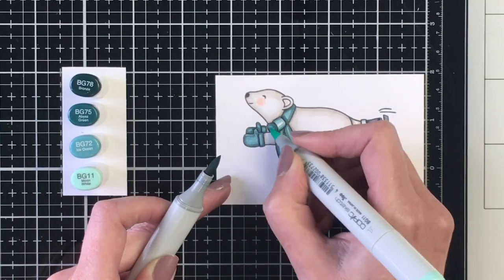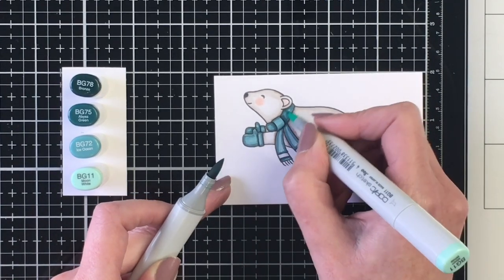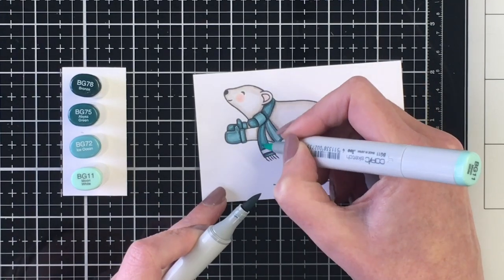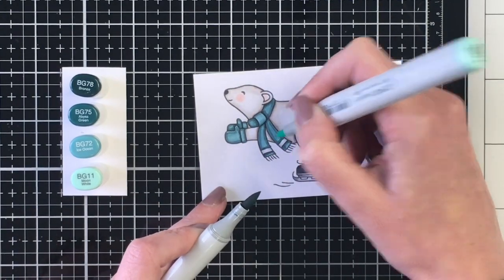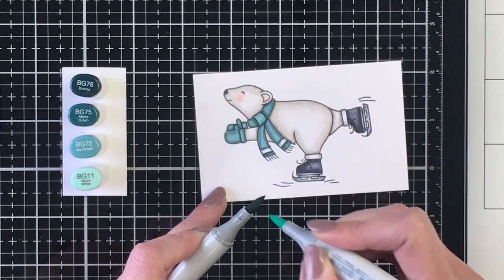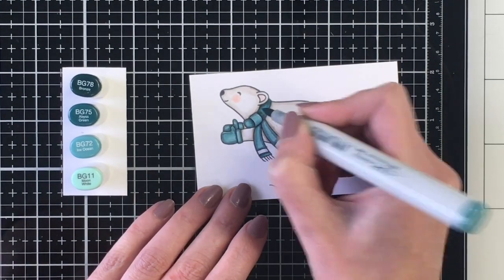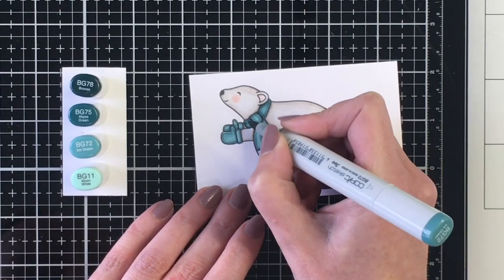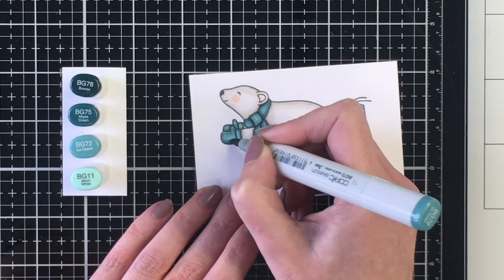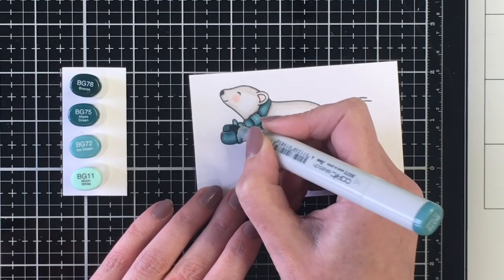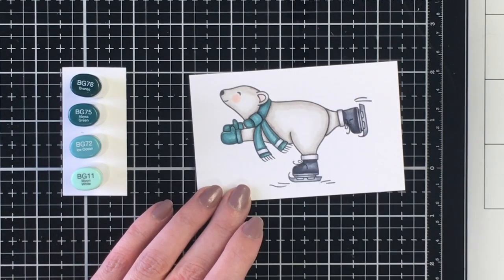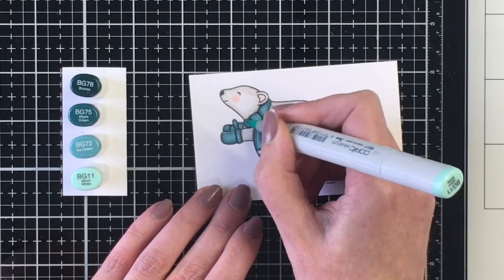Now because the BG11 is quite a ways away from the BG72, I am using the tip-to-tip technique here. Just touching the BG11 marker to the BG72 to blend that out. And then I found that some of that color really pushed back. So I'm going to come in with that darkest marker again, lay in those shadows, and then blend that out a little bit more.